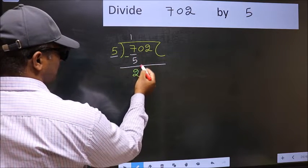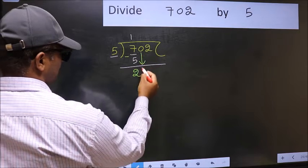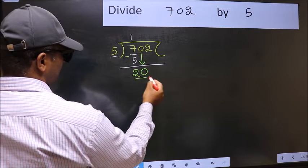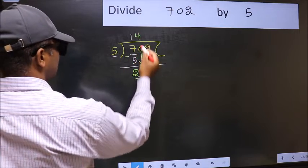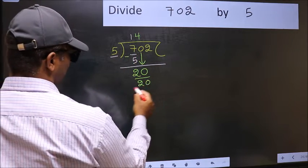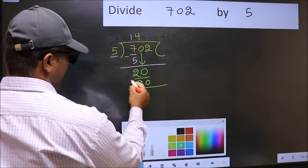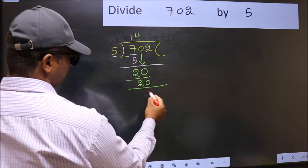After this, bring down the beside number. So 0 down. Now 20. When do we get 20 in 5 table? 5 fourths, 20. Now you should subtract 20 minus 20, 0.